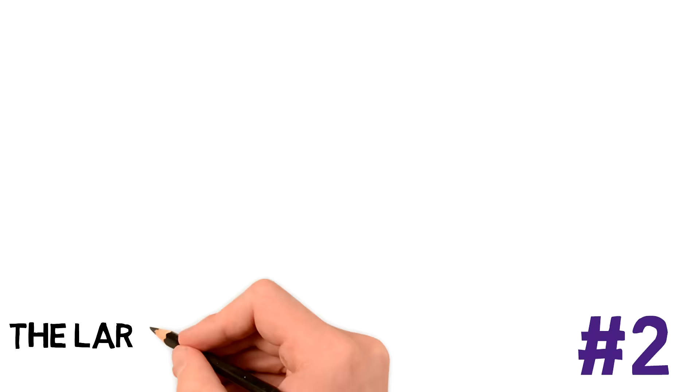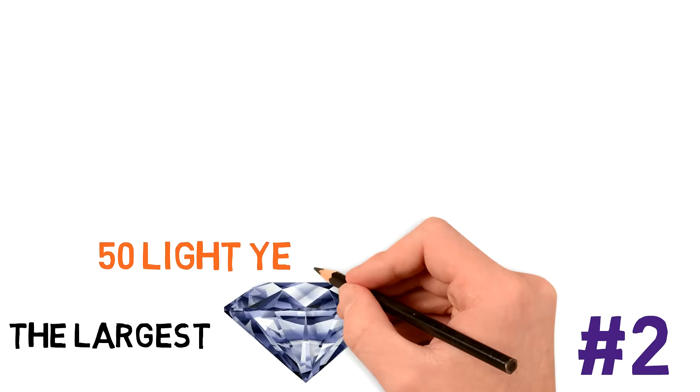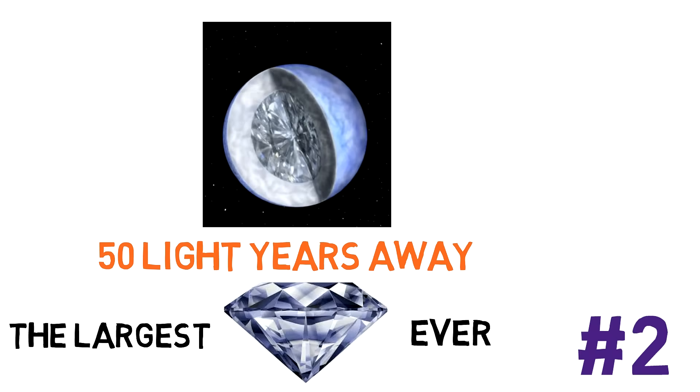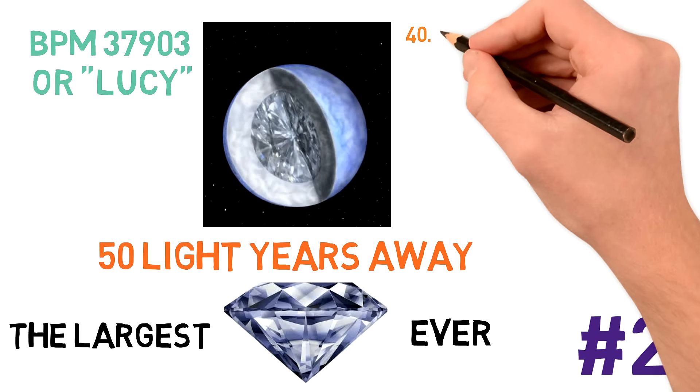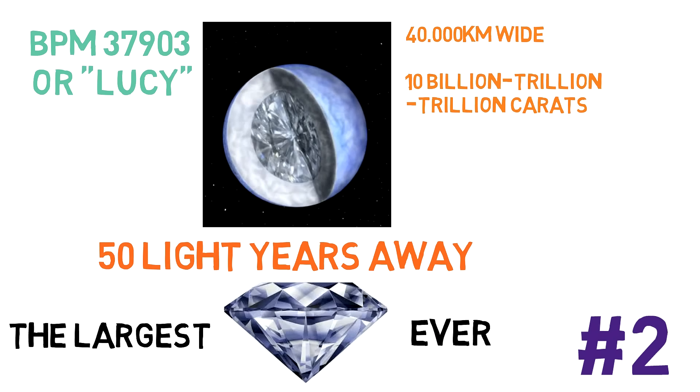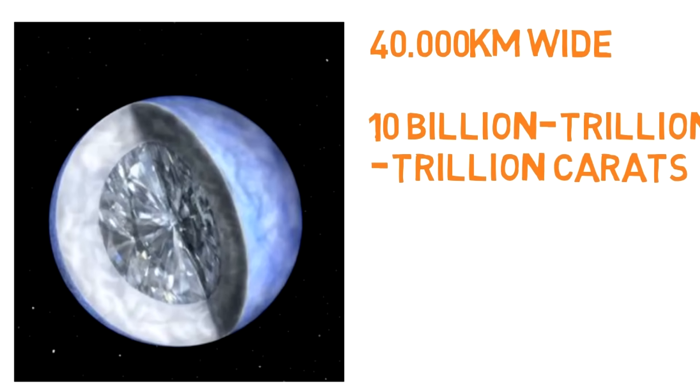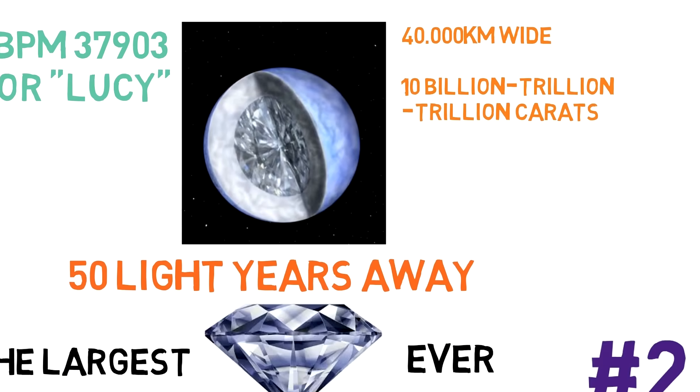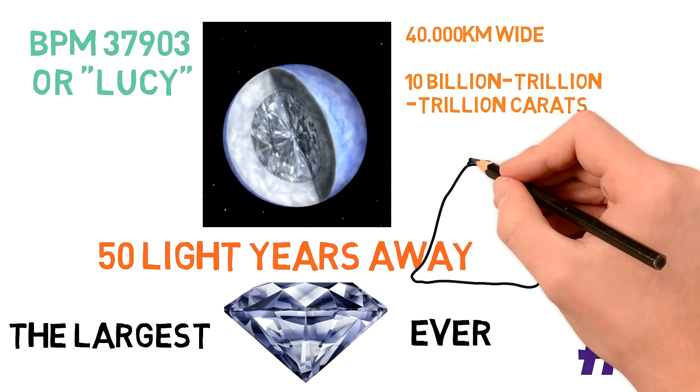Number 2. The largest diamond in the universe has been discovered by astronomers at 50 light years away. It's called BPM 37903 or Lucy and it's located in the constellation of Centaurus. At over 40,000 kilometers wide, it's larger than earth and weighs 10 billion trillion trillion carats. Now, considering one carat diamond costs up to $6,000, my calculator isn't even capable of calculating how much this one would be worth.